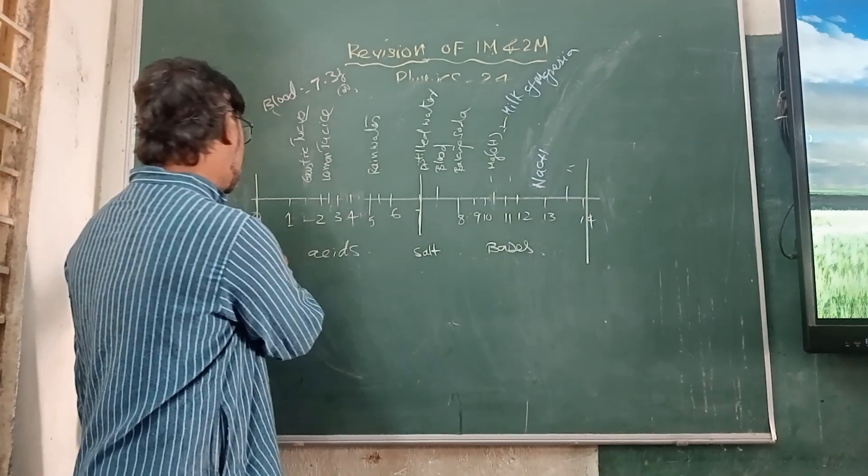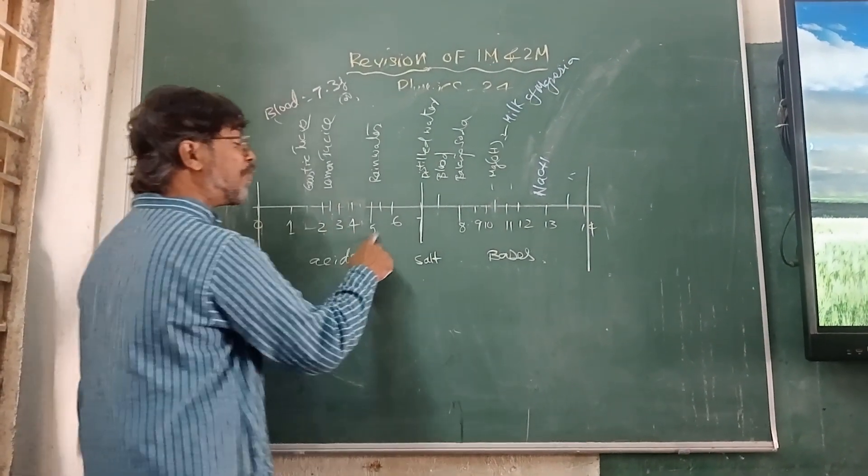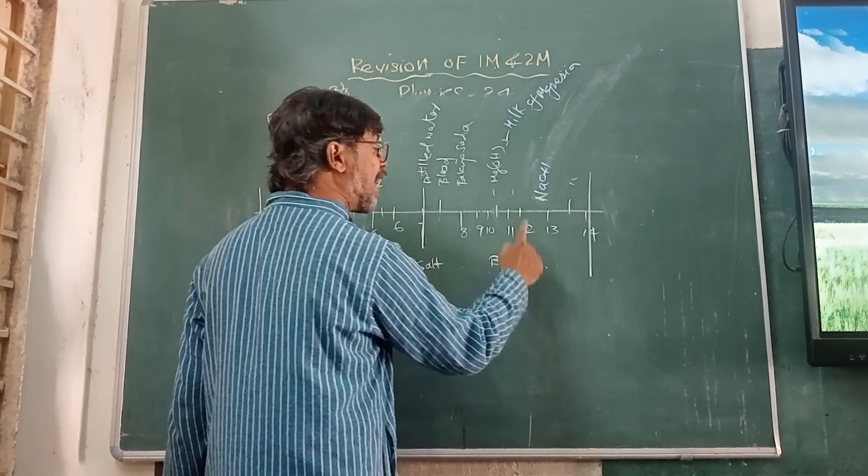Ready! Right! 0, 1, 2, 3, 4, 5, 6, 7, 8, 9, 10, 11, 12, 13, 14.